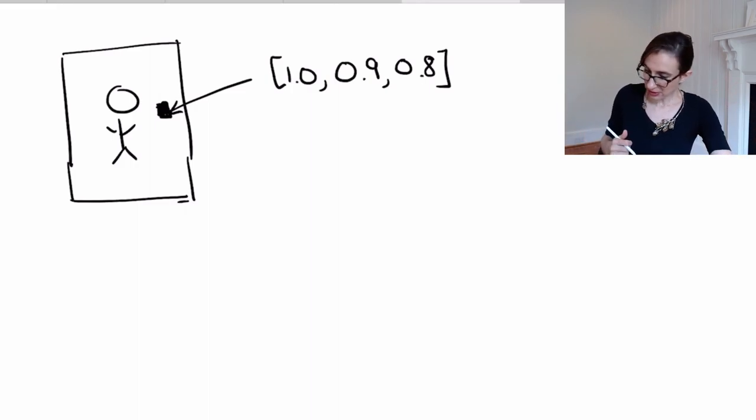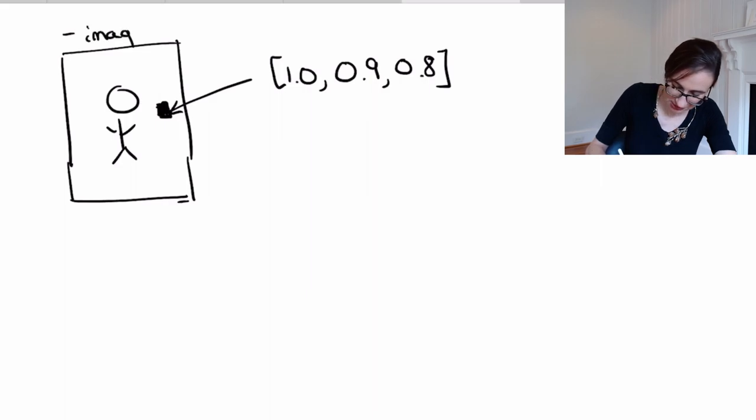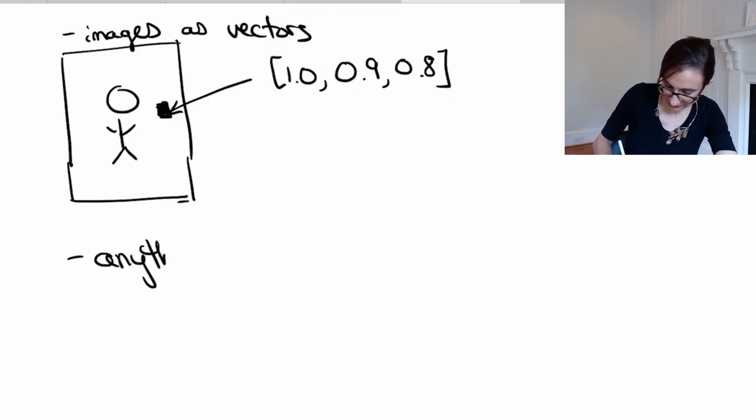And so an image can be considered as a vector. And so anything could be, and in fact, almost any object in this world can be represented as a vector. So let's say here, let's say images as vectors. And then let's say here, anything is vectors. Let me give you an example.